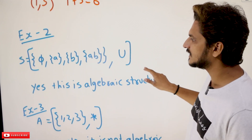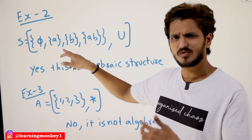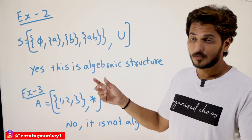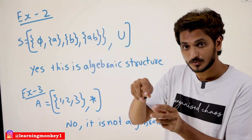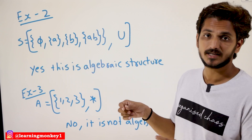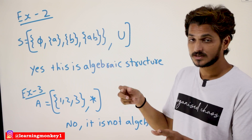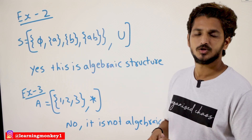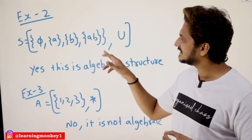Let's take one more example. Set S contains the empty set, set A, set B, and set AB, and the operation is union. You take any two elements — the union of those two elements should be present in set S. For example, empty set union set A is set A, which belongs to set S. Set A union set B is set AB, which also belongs to set S. So for any two elements, applying the union operation gives an element present in the set. This is an algebraic structure.